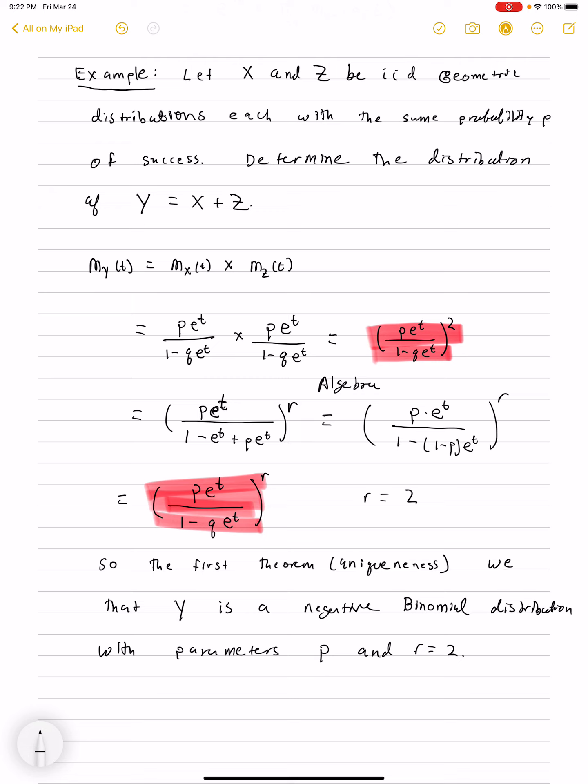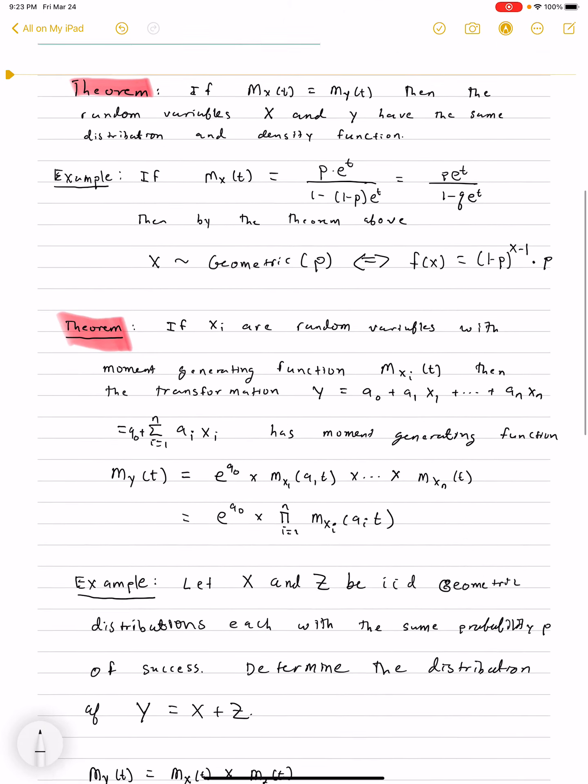And if we think about this, this makes a lot of sense. r equals 2 is the number of times we need to see success until we stop. That's precisely what you'd get if you repeated a geometric distribution, that then started another geometric distribution, as long as they're independent. So that was an example of these two theorems.